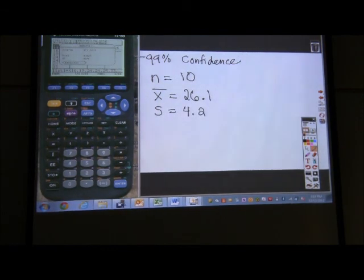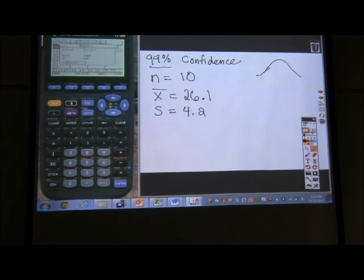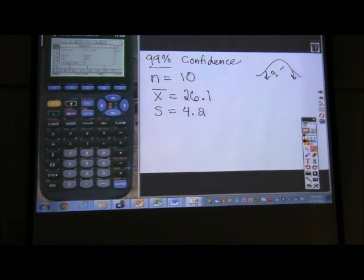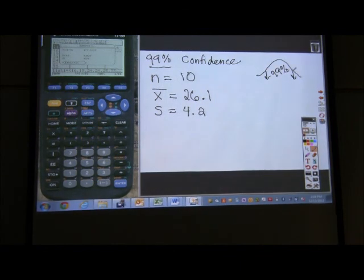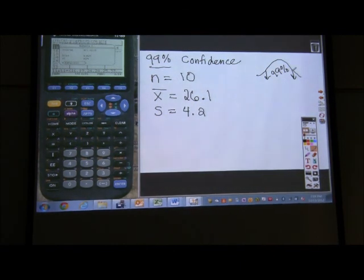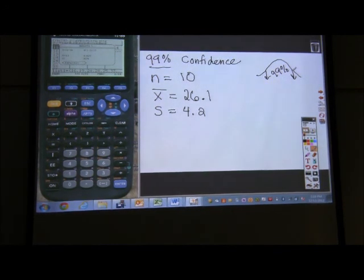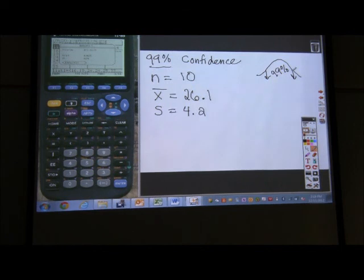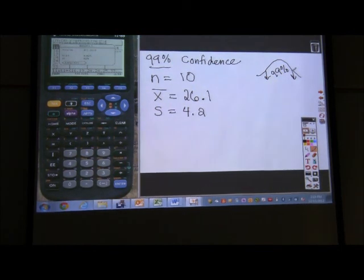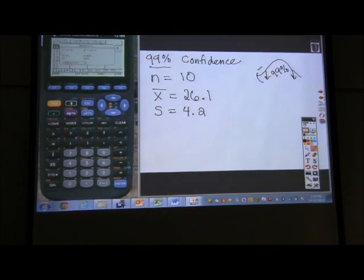I'm going to use this 99% confidence interval to figure out what my critical values are. So my critical values are 99. My critical values come from the T curve. If I have the middle 99%, how much do I have on the outside, Jenna? Sorry, it wasn't the same way. If I have the middle 99%, how much do I have on the outside? You have .5 on the outside. Good. I have a half of a percent on each side.